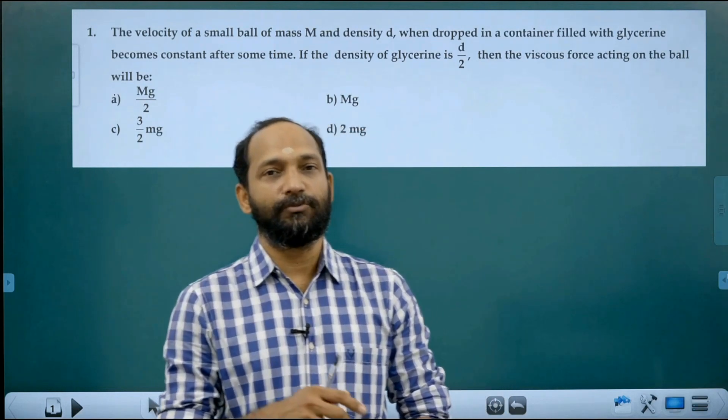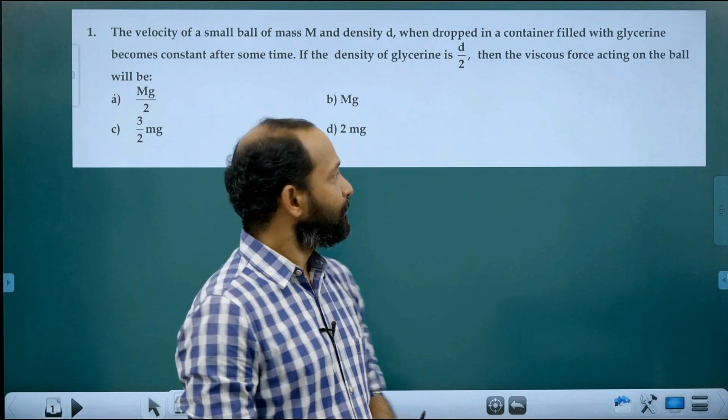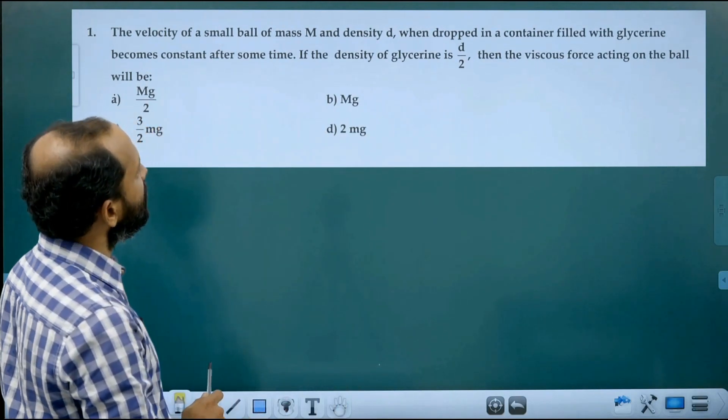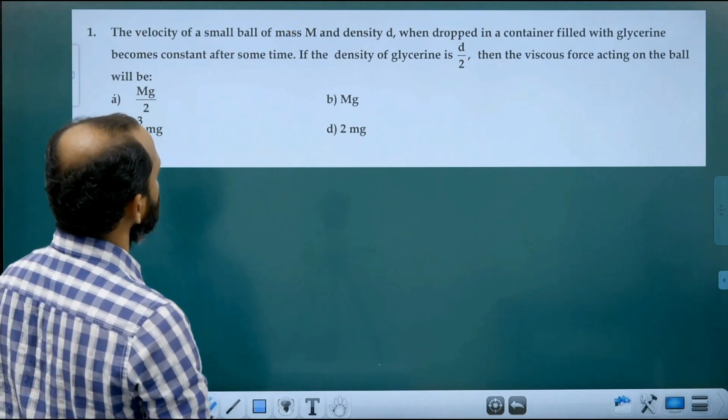This is a question from 2021 NEET paper. Here the density of glycerin is d by 2 where d is the density of the ball.